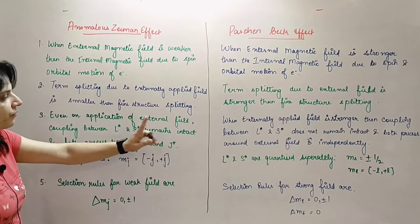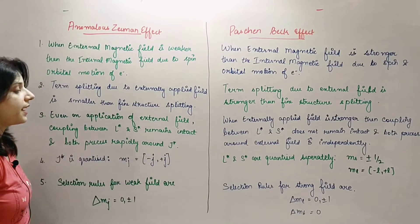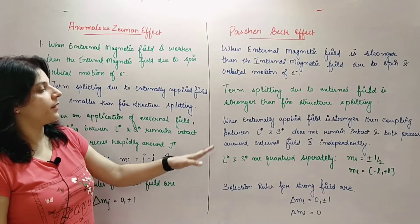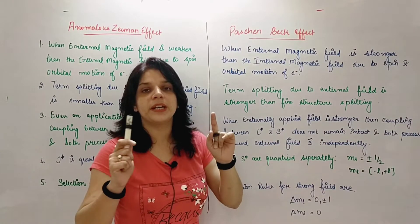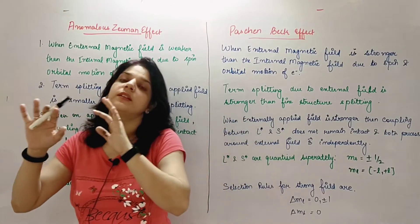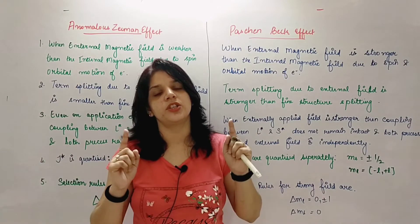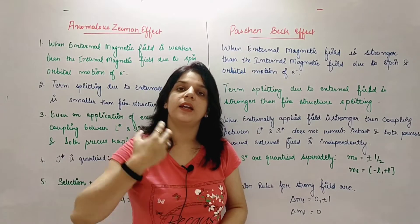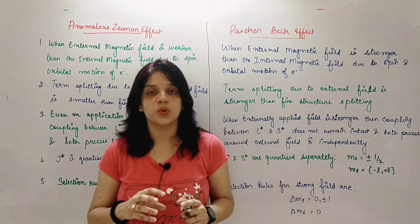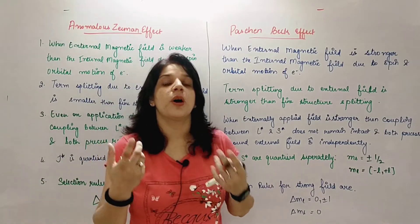Next part is, even on application of external field, the coupling between L and S remains intact. LS coupling as it is remains and the coupling causes both of them to precess around J at a high rate. Whereas, when externally applied magnetic field is stronger, the L and S coupling that's happening between them will break and both of them will get aligned in the direction of external magnetic field separately. Earlier what was happening? There was S direction, there was L direction, due to coupling of both a J vector was coming out and L and S both were precessing around it, irrespective of direction of external field. But when external magnetic field is stronger, in that case their mutual coupling will break, they'll both align themselves in the direction of magnetic field which we are externally providing.